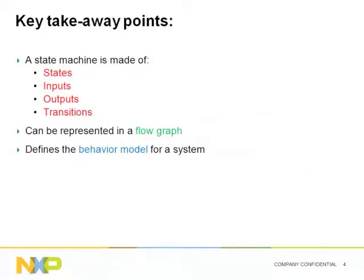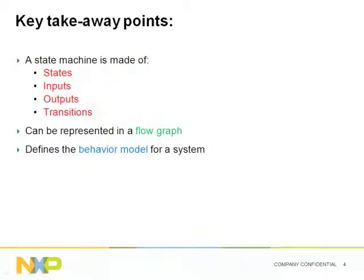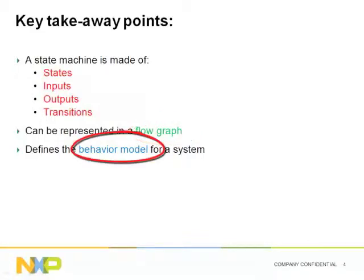So the key takeaway points for a state machine definition are recalled above. A state machine is made of states, inputs, outputs, and transitions between the states. It can be represented in a flow graph, and it defines the behavior model for a system.